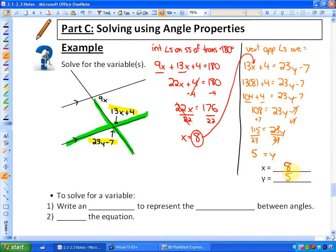So that is how we can use properties in order to solve for variables in algebraic expressions. In your steps, it says to solve for a variable. What you're going to start by doing is write an equation to represent the relationship between the angles. So I wrote two of them. I noticed that they had a relationship of interior angles on the same side of the transversal and vertically opposite angles. And the next thing you do is solve the equation.